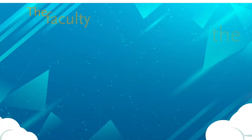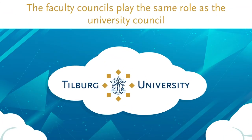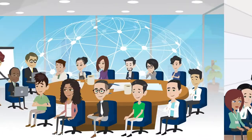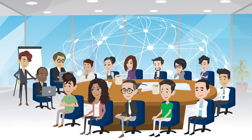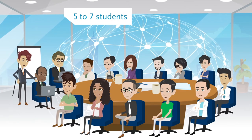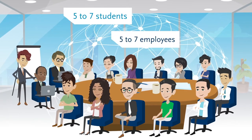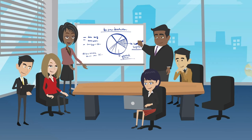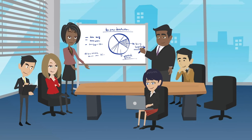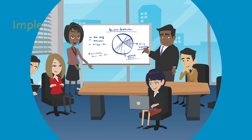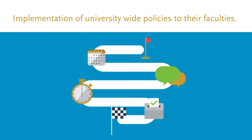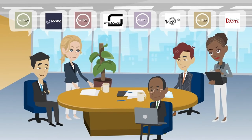The faculty councils play the same role as the university council, but on a smaller scale. Each faculty council consists of five to seven students, five to seven employees, and the faculty board. Their task is to advise their respective faculty boards on the implementation of university-wide policies to their faculties. Each faculty council has two parties.